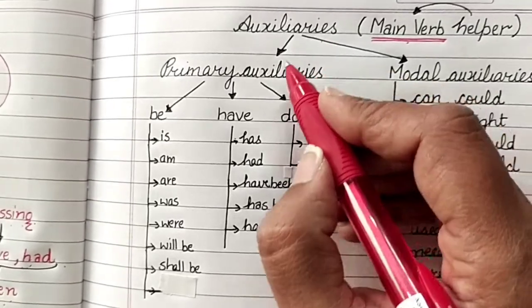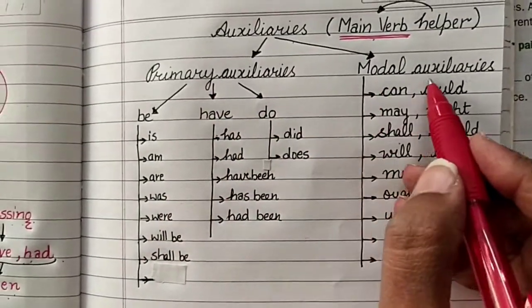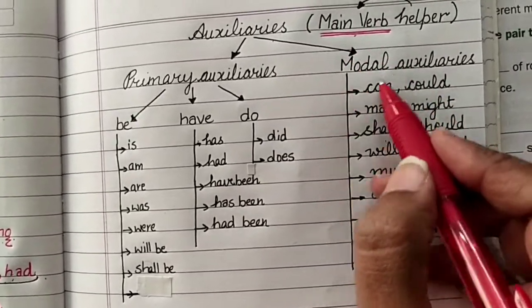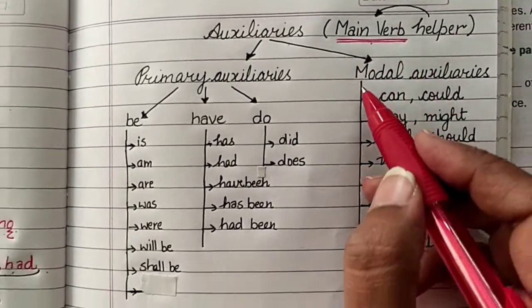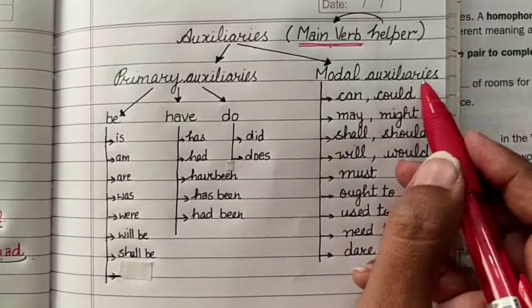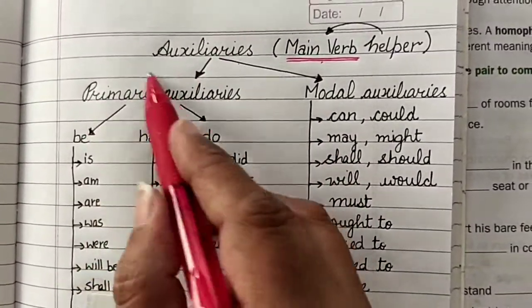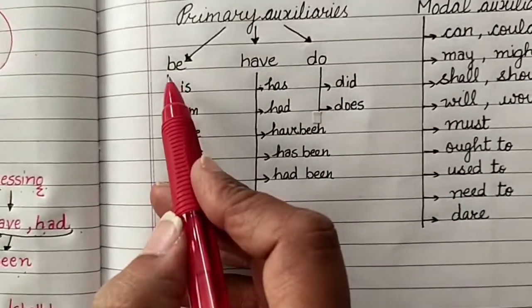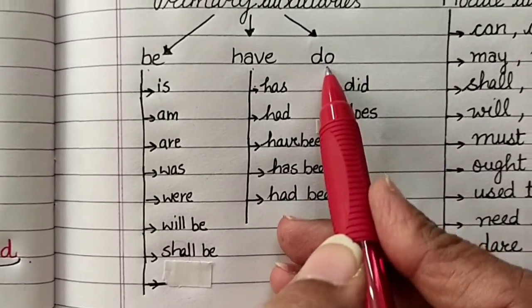Now, auxiliaries could further be divided into two parts. Primary auxiliaries and modal auxiliaries. In classes, you will learn modals. Sometimes, you only say modals. So what are modals? They are modal auxiliary verbs only. And we search auxiliaries also called like primary. In primary auxiliaries, we take again the same verbs. Be forms, have forms and do forms.